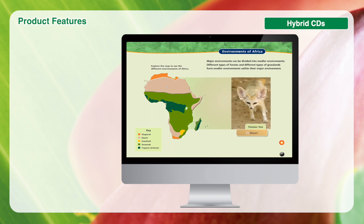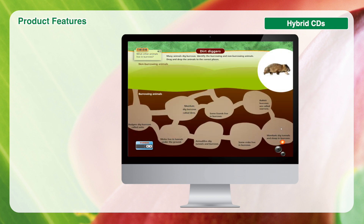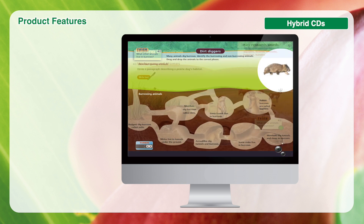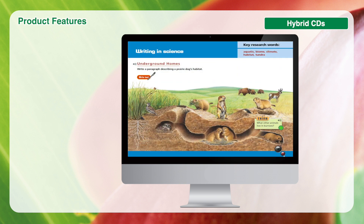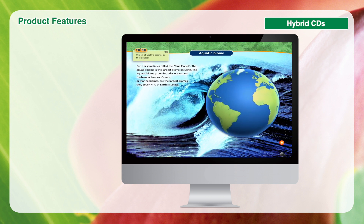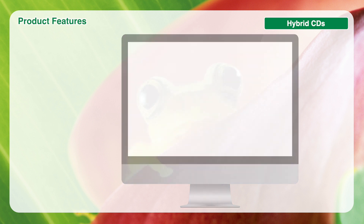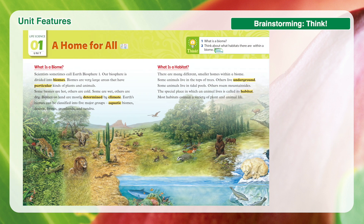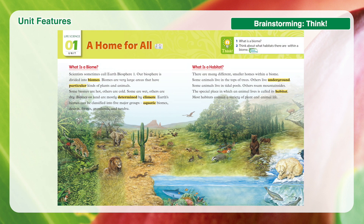The content in the hybrid CD is also provided in the Interactive Science Plus Second Edition mobile application, which is available soon. Each book contains 15 units of 6 pages. Let's take a close look at its features.